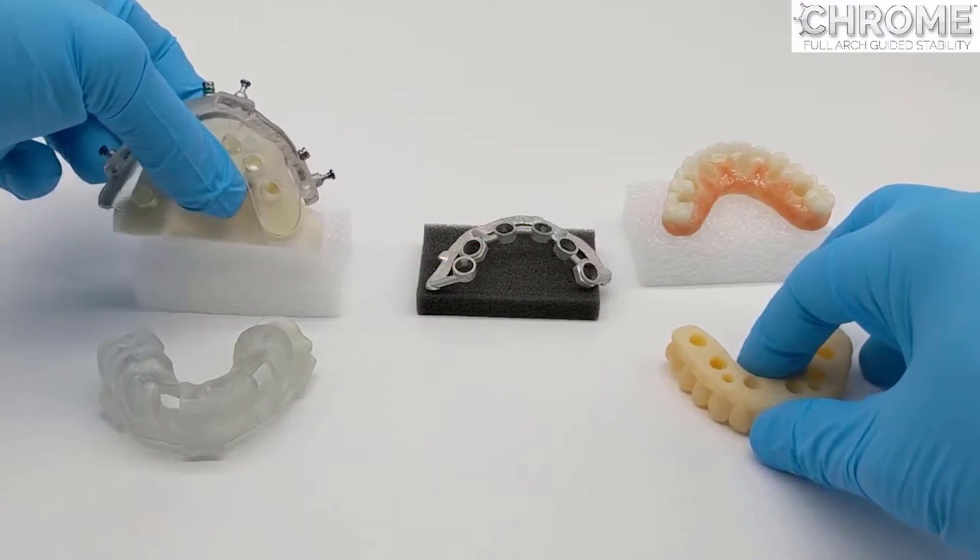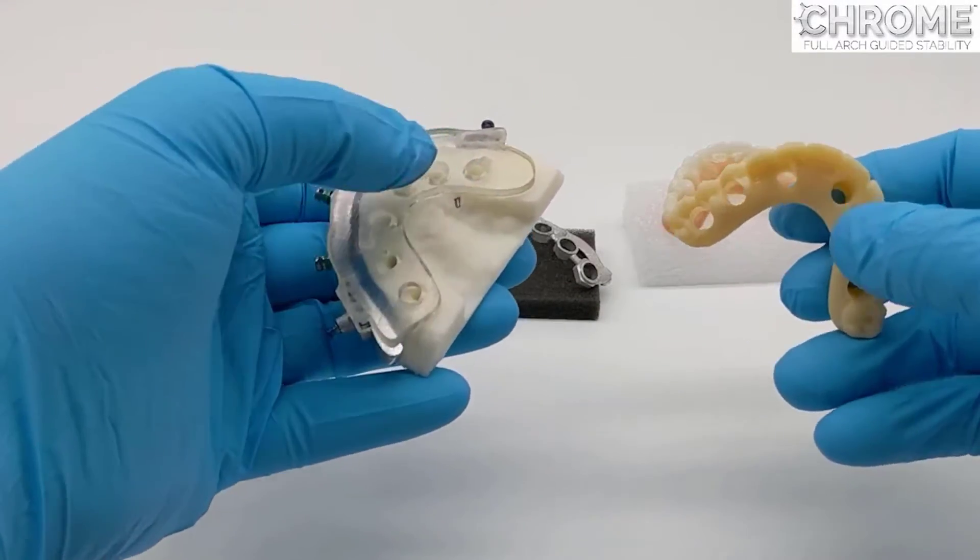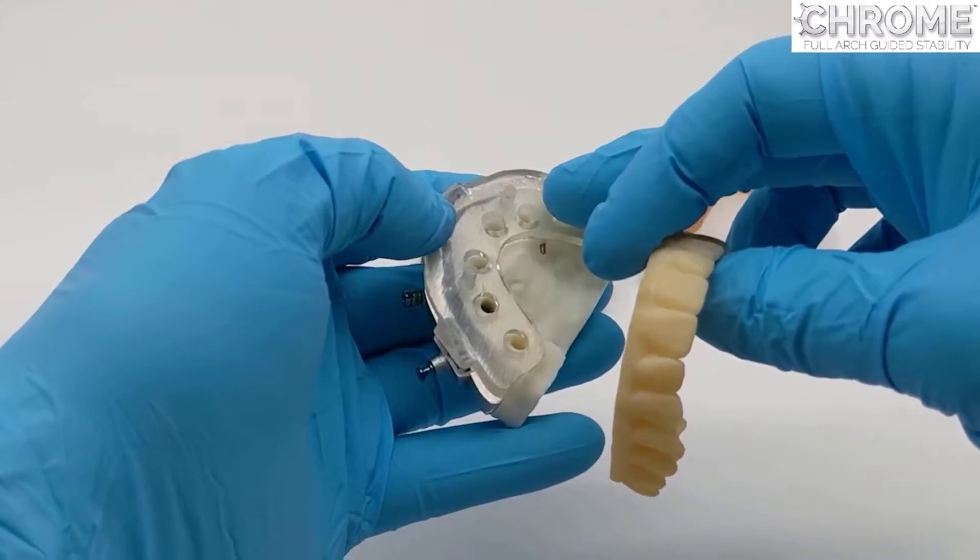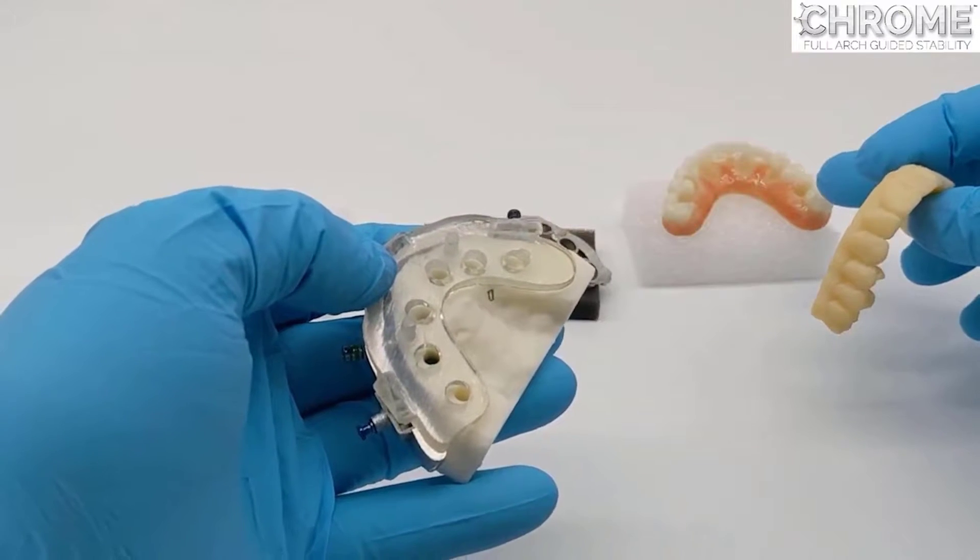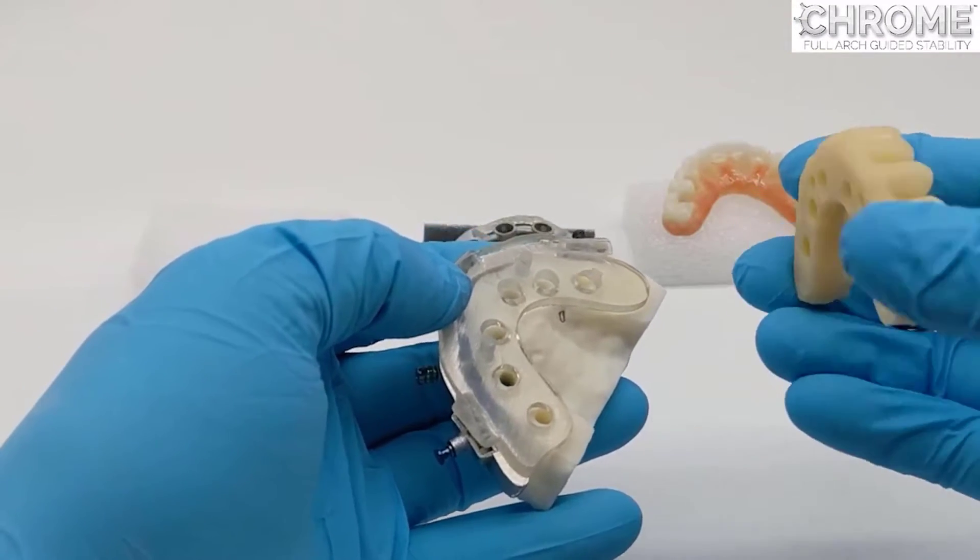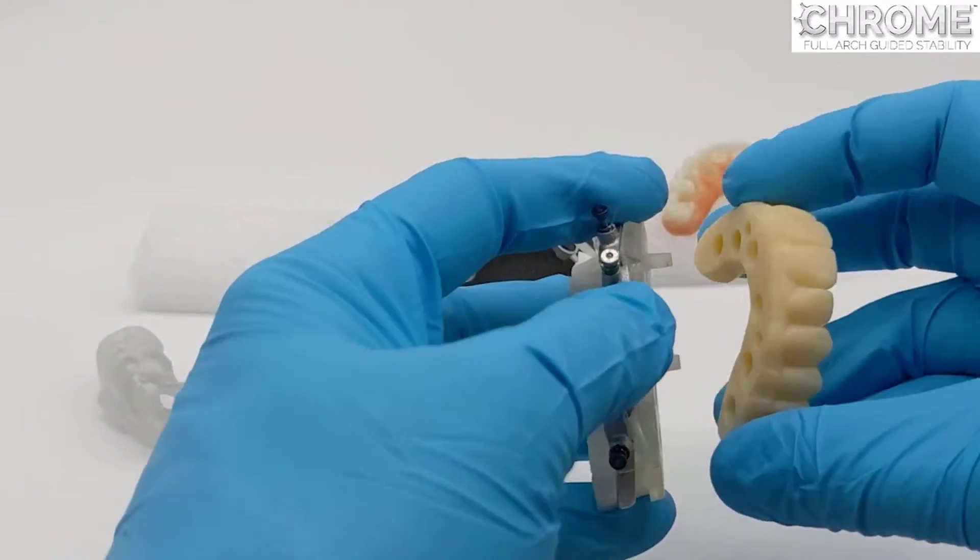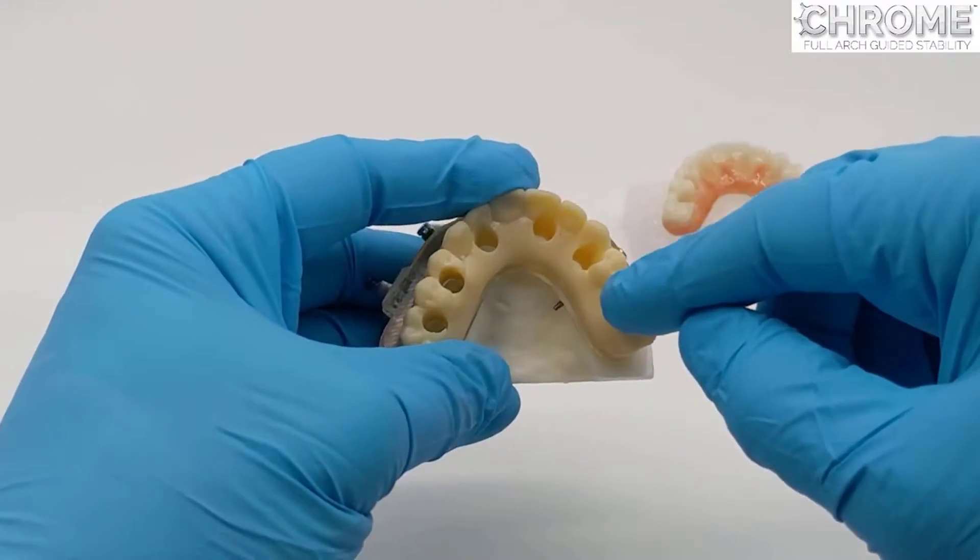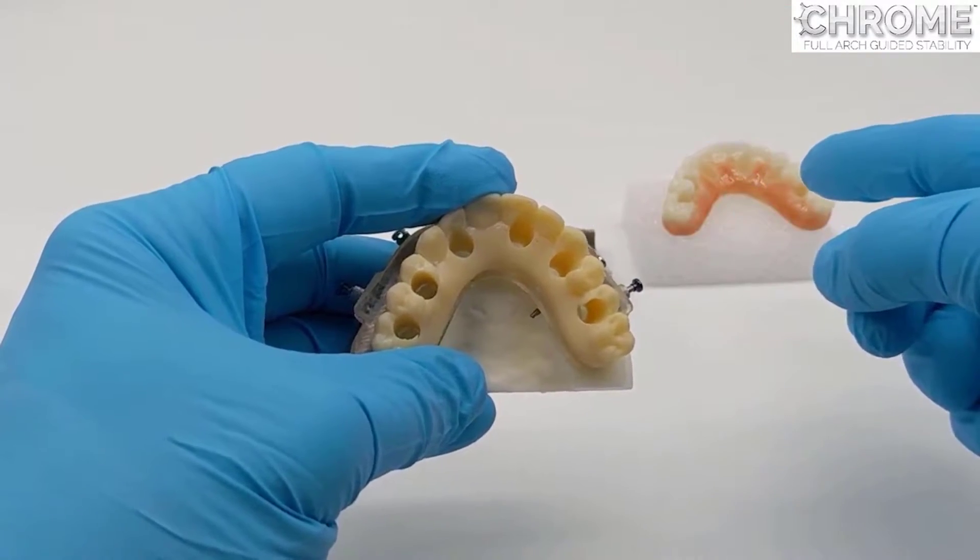One of the key features of Chrome Guided Smile is a dual pickup process. The carrier guide supports the long-term prosthetic and also supports the duplicate monochromatic rapid appliance. The rapid appliance seats on the carrier guide and you will perform a second pickup just like with the prosthetic.